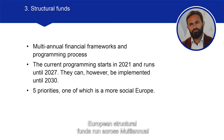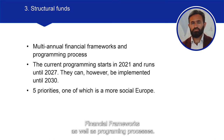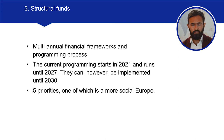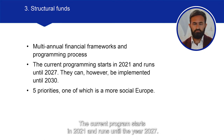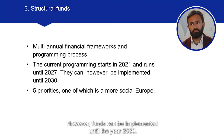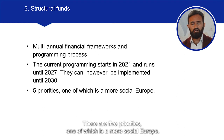European structural funds run across multi-annual financial frameworks as well as programming processes. The current program starts in 2021 and runs until the year 2027. However, funds can be implemented until the year 2030. There are five priorities, one of which is a more social Europe.